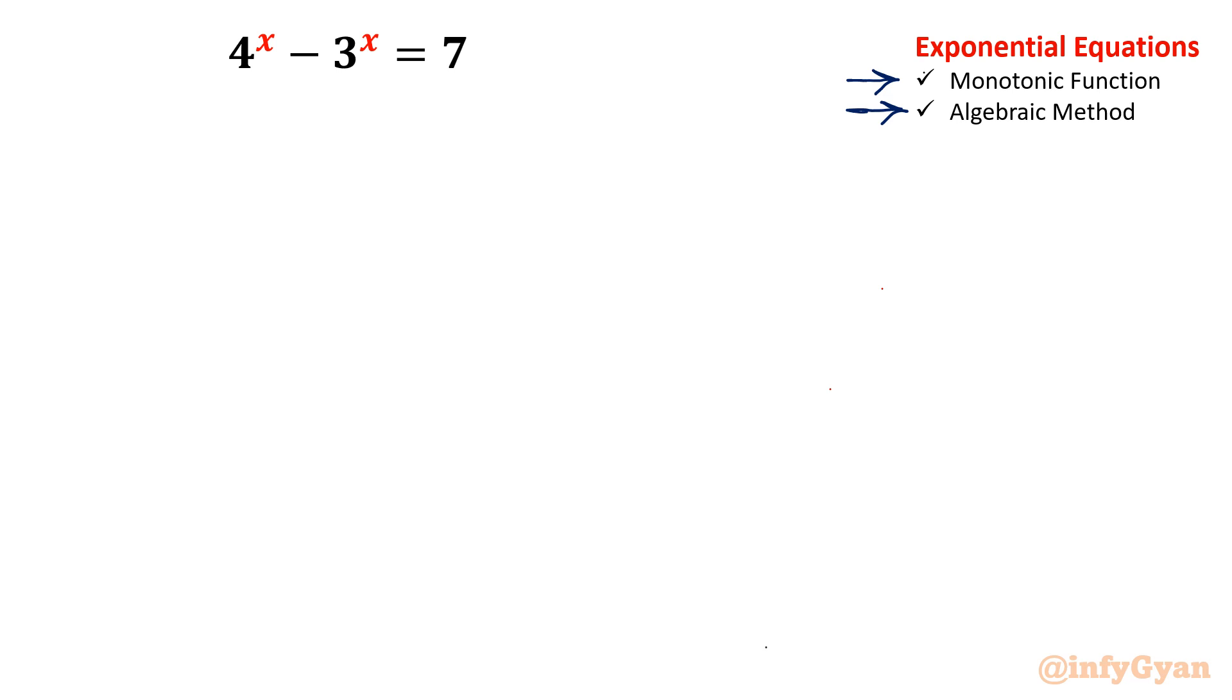So let's start by considering minus 3 raise to the power x towards right. So 4 power x is equal to 3 power x plus 7. Now divide both sides by 4 raise to the power x. So 4 raise to the power x over 4 raise to the power x equal to 3 raise to the power x over 4 raise to the power x plus 7 times 1 upon 4 raise to the power x.